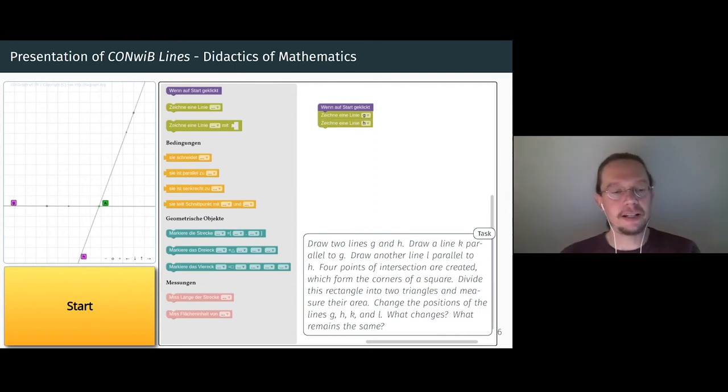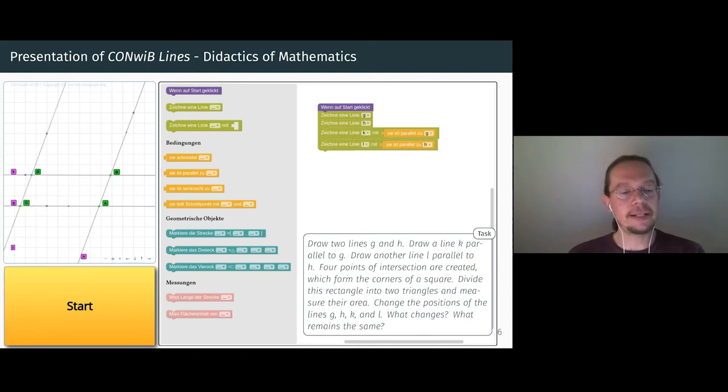We draw a second line, the line H. Line G and line H almost always intersect. The point of intersection is automatically named here with A. We draw a line K with condition. It should be parallel to G. The drawn line K has to intersect with line H. The point of intersection is named B. We draw a line L that should be parallel to H. Now a total of four intersection points have been created. These form a quadrangle. With this last step, the construction description itself is completed.